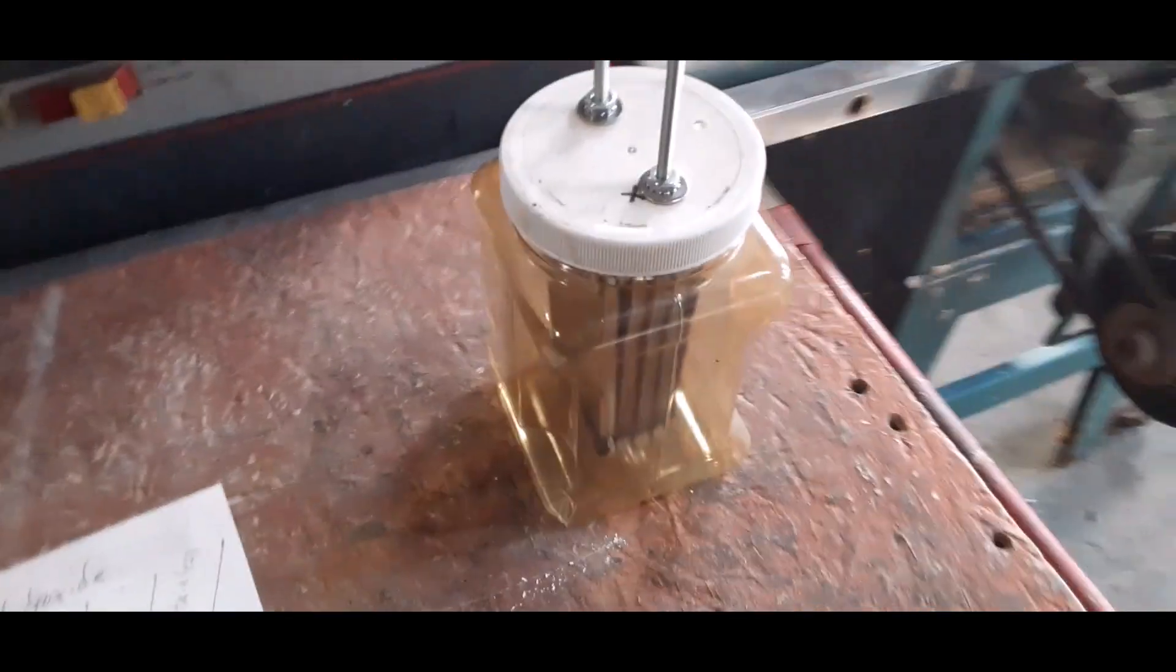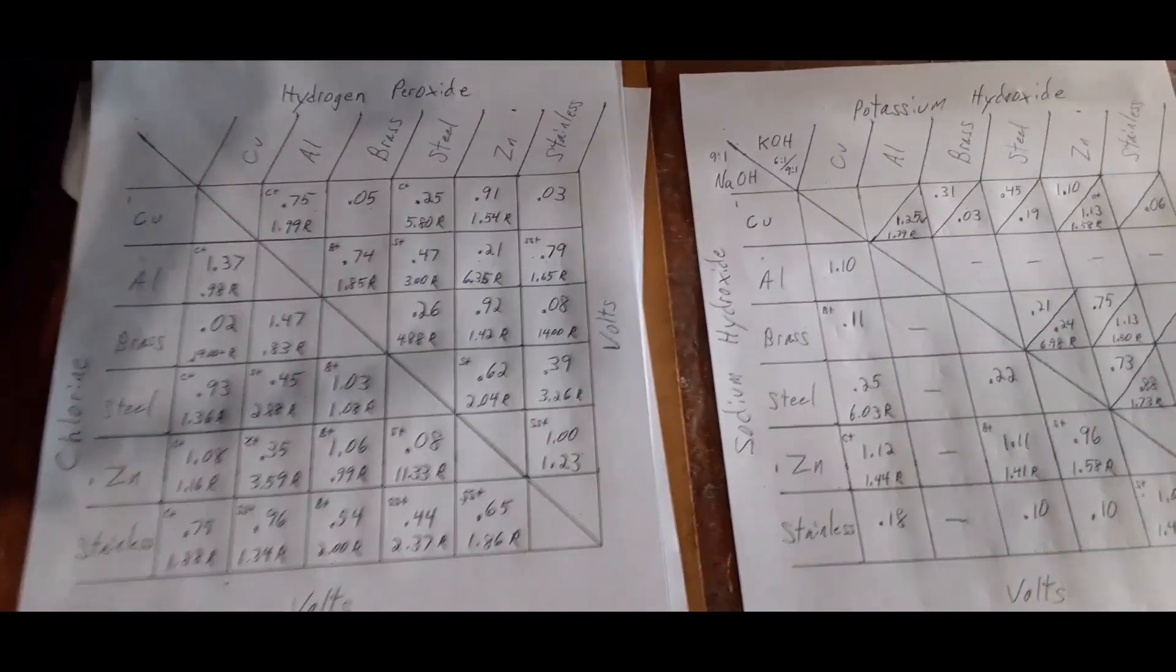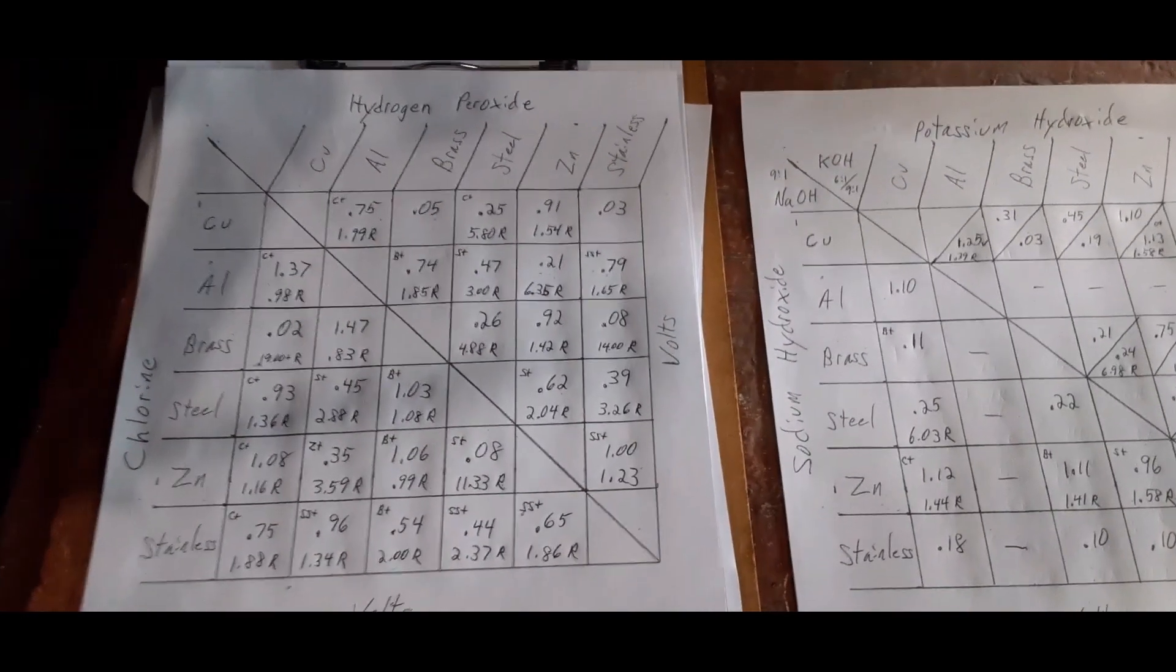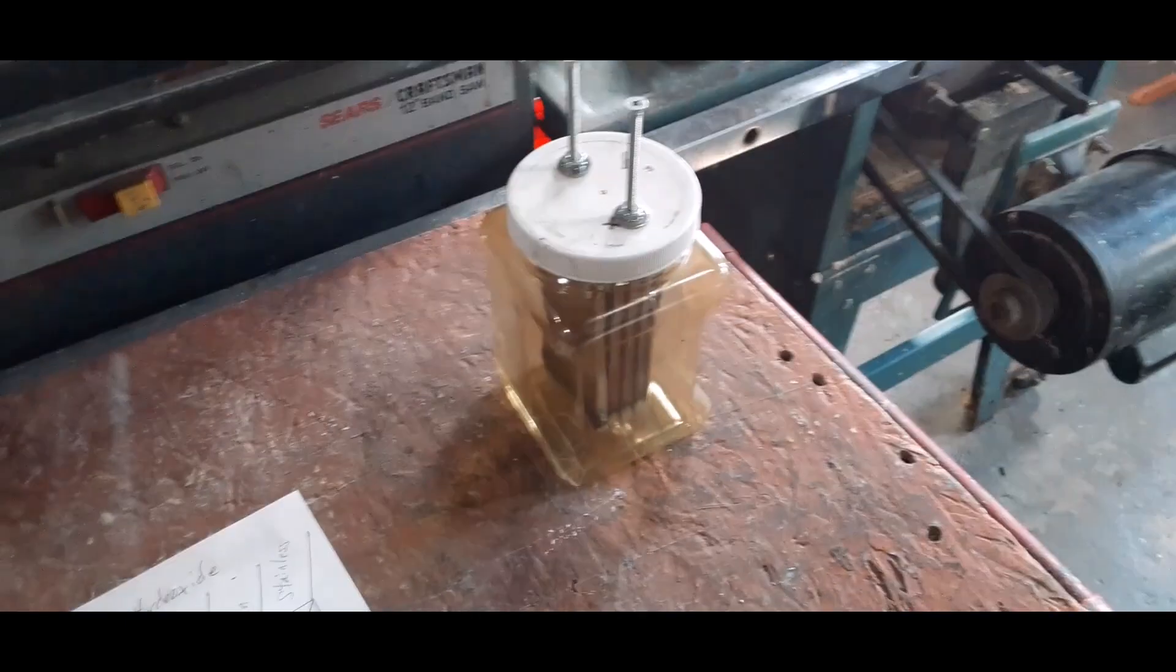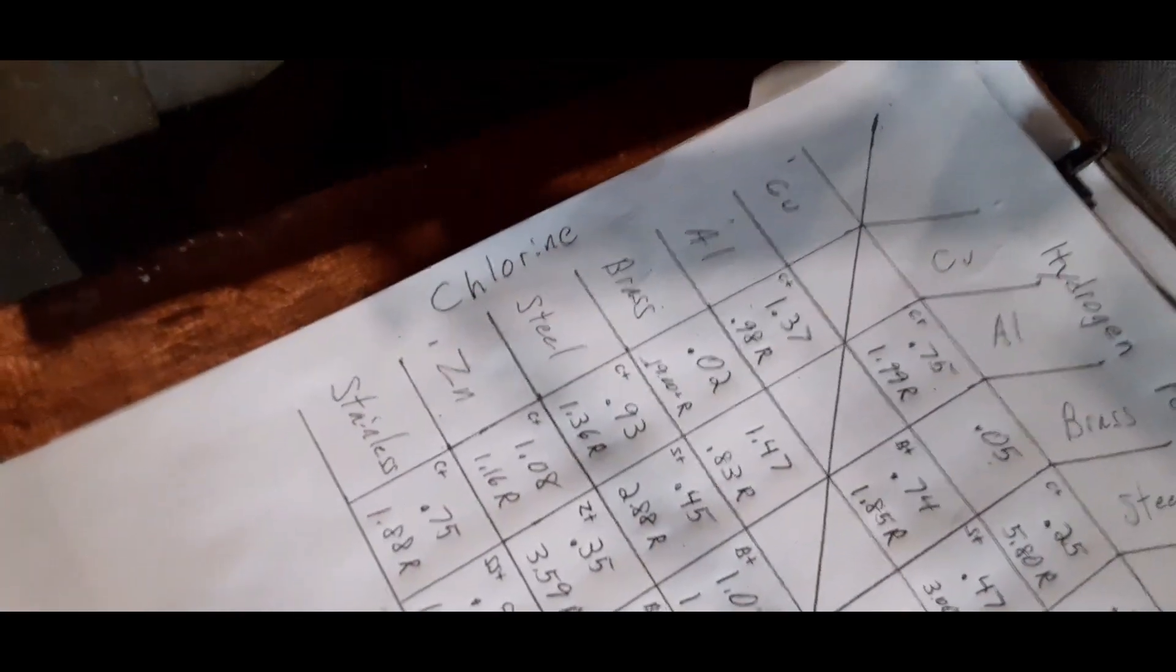Alright, here's my first cell prototype. What I'm gonna do with my testing is pick out the best ones that worked with particular metals. In this case, I'm gonna start out with chlorine. Not much hope for it, but I have copper and aluminum in there.